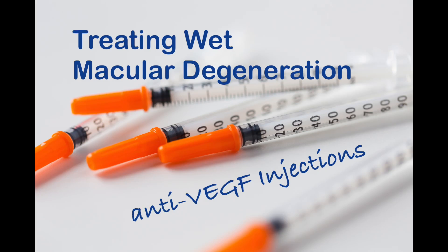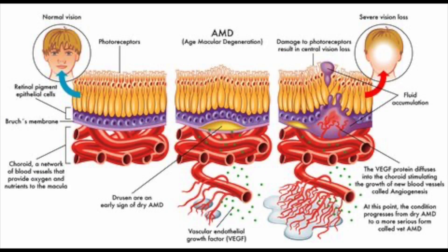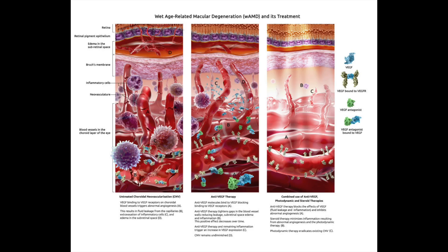They often don't do laser anymore for wet macular degeneration, but rather now they're doing injections into the eye with something called an anti-VEGF medication. When your body has a situation where there aren't enough nutrients, it sends out a signal by creating VEGF — vascular endothelial growth factor — which tells the body to create new blood vessels. Anti-VEGF medications, mostly used for cancer treatments, are injected into the eye to stop that cycle. This stops the signal for the body to grow new abnormal blood vessels underneath the retina, allowing that blood and fluid to reabsorb and allowing the vision to improve.